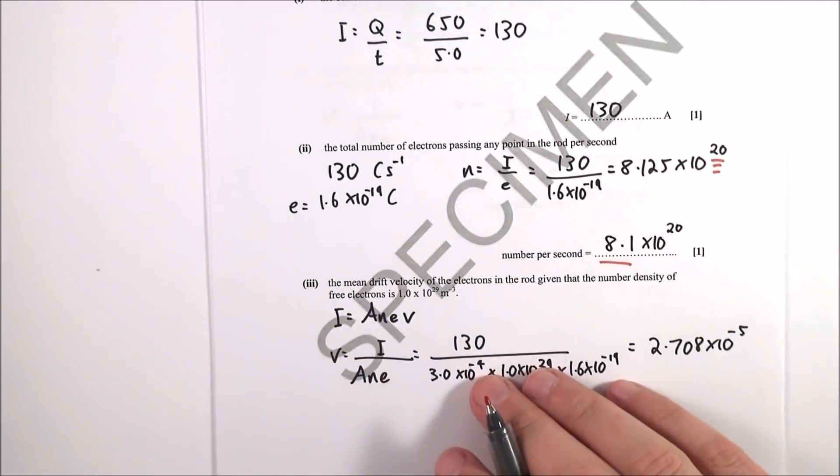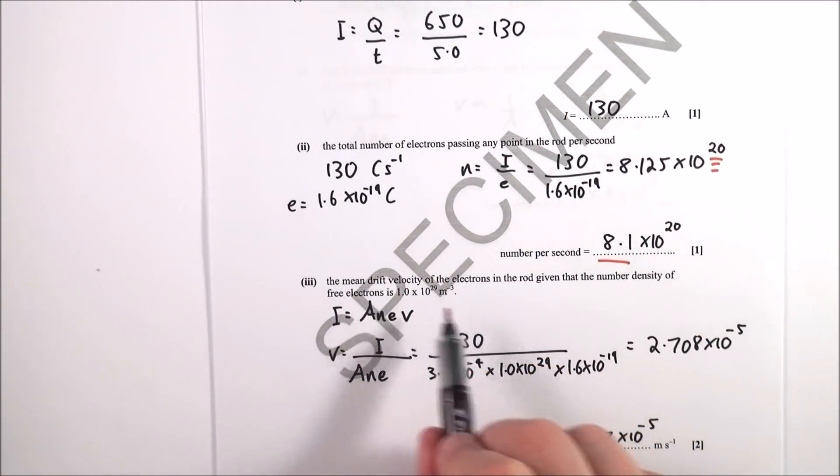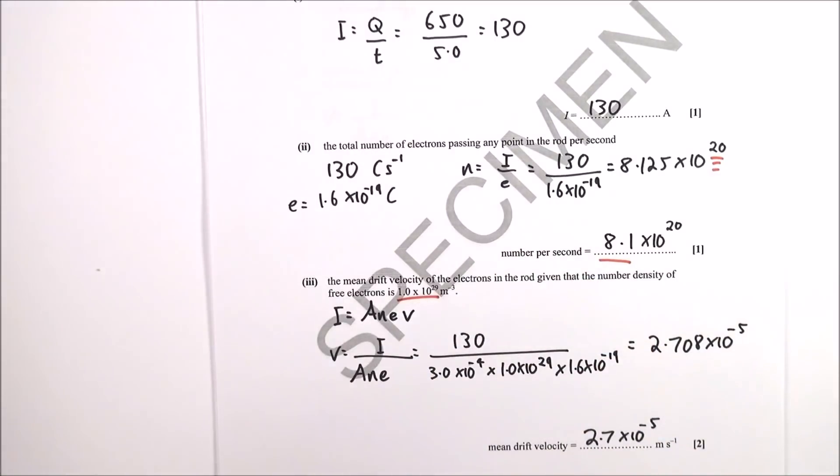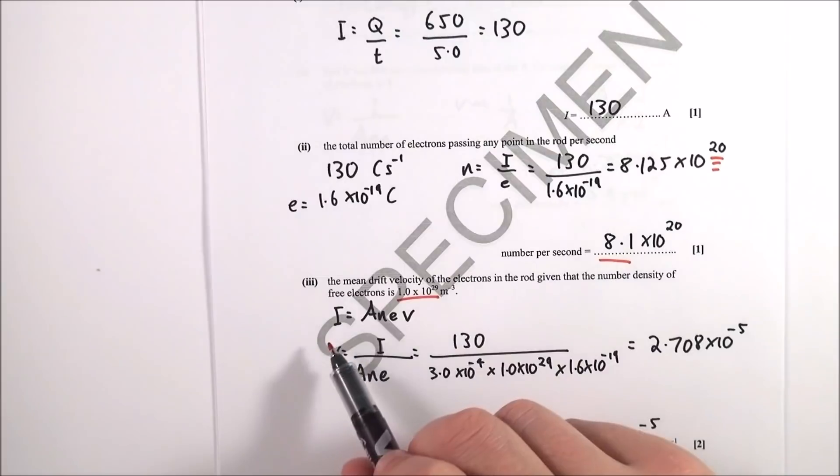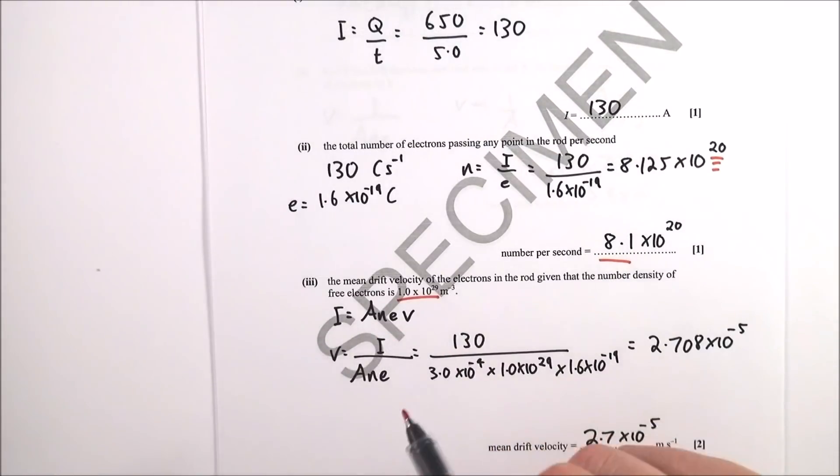Part three, we want to find out the drift velocity of the electrons, given that the number density is 1 times 10 to the 29. So this is in your data book, I equals A-N-E-V, or I-N-A-V. V then is equal to I over A-N-E.